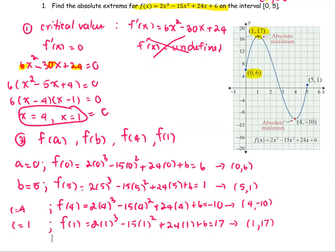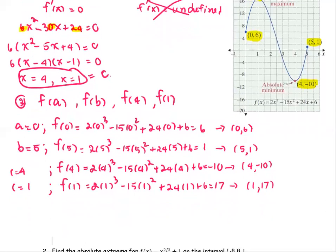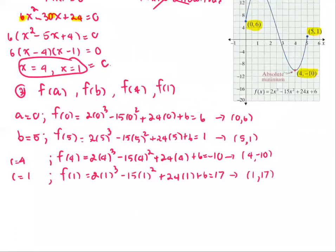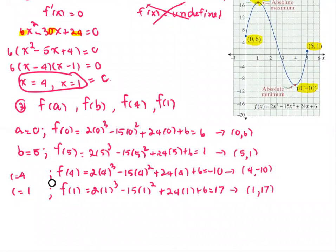Summarizing all points on the curve: at x = 0, f = 6, giving (0, 6); at x = 1, f = 17, giving (1, 17); at x = 4, f = −10, giving (4, −10); and at x = 5, f = 1, giving (5, 1). The last step is to compare all these function values from Step 2.